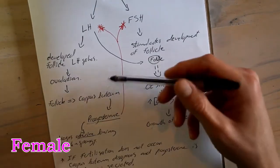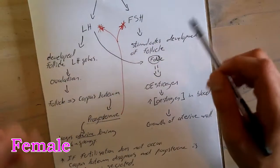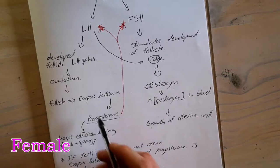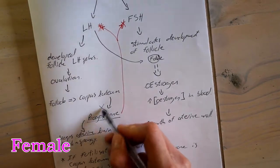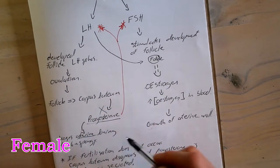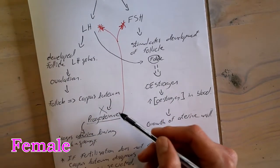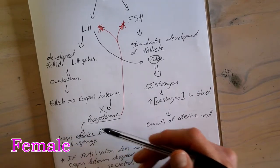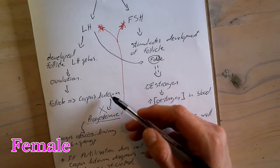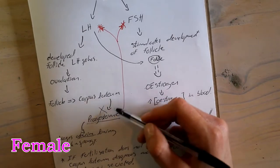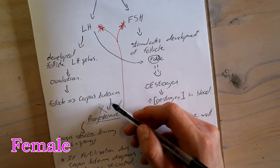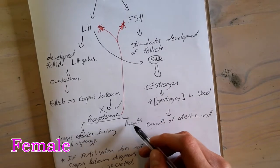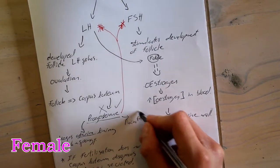If fertilization does not occur, the corpus luteum disappears and progesterone is no longer secreted. This leads to the breakdown of the uterine wall and menstruation. If fertilization does occur, the corpus luteum continues secreting progesterone, and the placenta develops and further secretes progesterone.